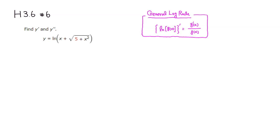Before we take the derivative, I should rewrite this. I don't like square roots, so I'm going to rewrite this as the quantity (5 plus x squared) to the 1/2 power, since square root is equivalent to the 1/2 power. So first derivative — y prime is equal to...